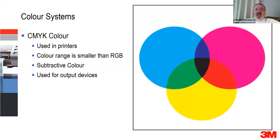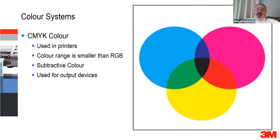The opposite of that is CMYK — cyan, magenta, yellow, and black. K is called key. If you add cyan, magenta, and yellow together — they're called a subtractive color — they will subtract from each other to produce black. However, if you've ever seen cyan, magenta, and yellow together, it doesn't create pure black; it creates a muddy brown. So you've got to add in that key channel to give you the black. The color range is smaller than RGB, and it's used for output devices — so it's used for all our printers.